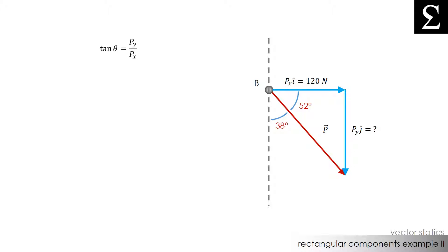The tangent of theta, in this case the 52 degrees, is equal to the opposite side over the adjacent side. In other words, tangent of 52 degrees is equal to the magnitudes Py over Px. We don't know what Py is, but we do know that Px is equal to 120 N. If we solve for Py, we find that the magnitude of Py is 153.6 N.